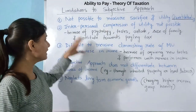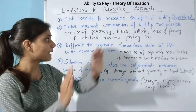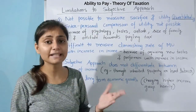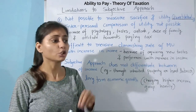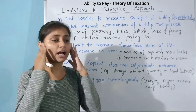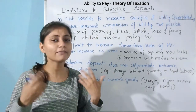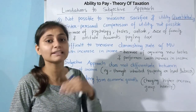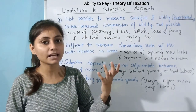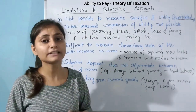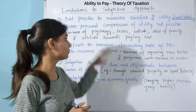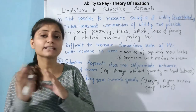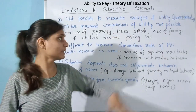The second limitation is the problem of interpersonal comparison of utility. Even if we represent utility somehow, comparing utility between two people is difficult because everyone's psychology is different. For example, a very miserly person may feel great loss even at one rupee of tax, while a hardworking patriotic person may happily pay tax feeling it benefits the country. So whose utility loss is real and whose is exaggerated?